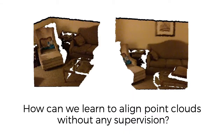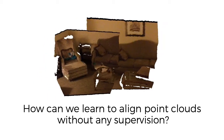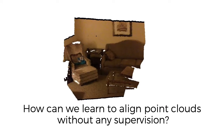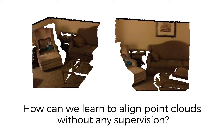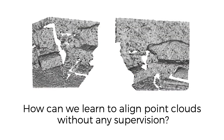In this work, we tackle the problem of geometric point cloud registration. That is, given two point clouds, how can we find the transformation that best aligns them? We're interested in doing this without relying on any supervision. This task is typically solved by finding corresponding points between the two scenes — for example, the corner of the pillow or the top left corner of the couch. While those might be easy to discern from a colored point cloud, the task becomes much harder if we only rely on the raw, uncolored point cloud.